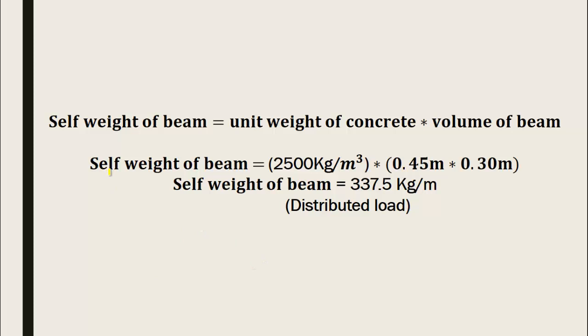If you want to determine the self-weight of the beam per unit length, ignore the length of the beam and just multiply the unit weight of concrete by its cross-sectional dimensions: height and width. After calculation, we get 337.5 kg per meter. Now this is the distributed load of the beam, and you can use this value in the design of the beam and for other engineering purposes.